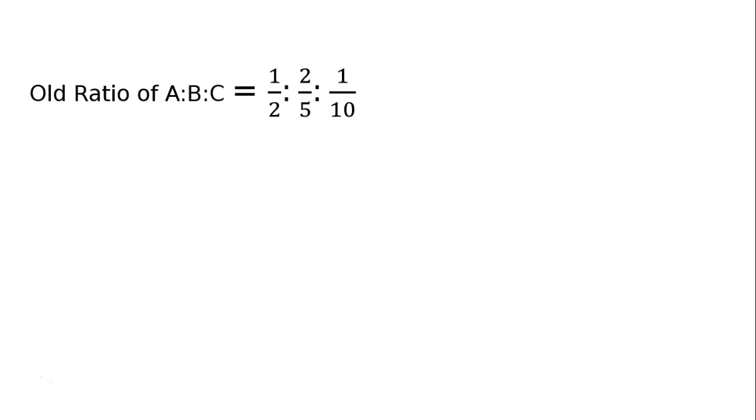Old ratio of A:B:C = 1/2 : 2/5 : 1/10. That is equal to 1/2 × 5/5 : 2/5 × 2/2 : 1/10.